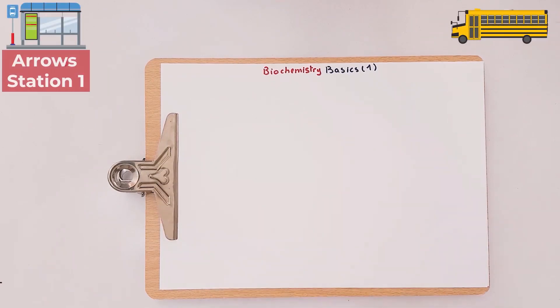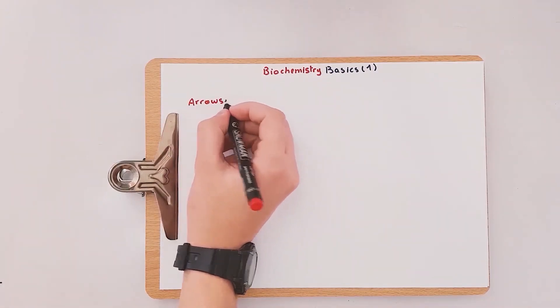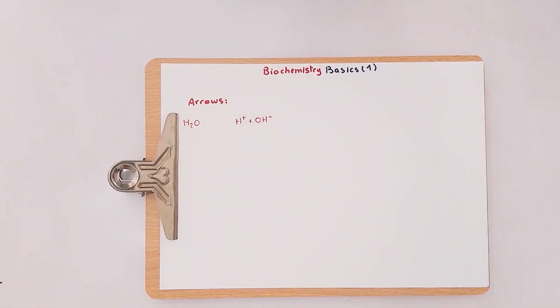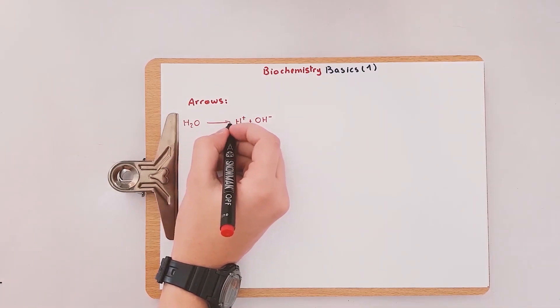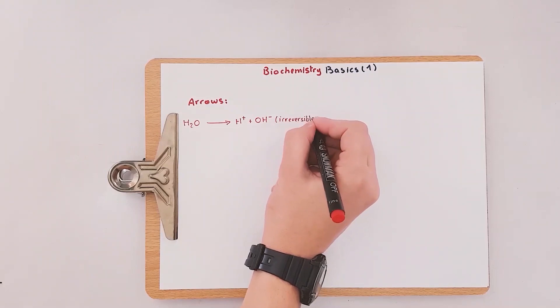The first thing that causes many confusions for learners is the arrows. We'll use the dissociation of water into ions as an illustration. The first arrow signifies that this reaction is irreversible and the ions cannot combine anymore to reform a water molecule.